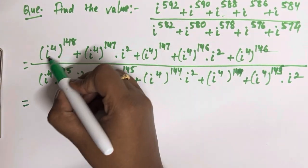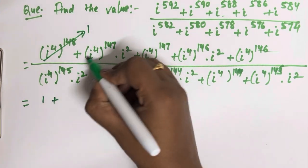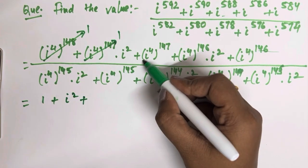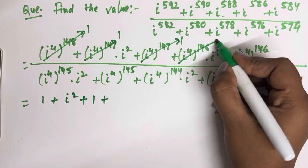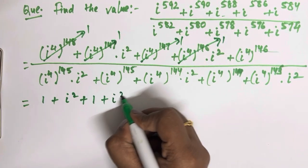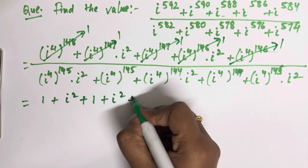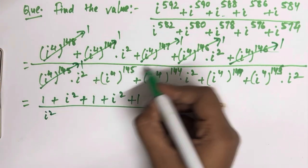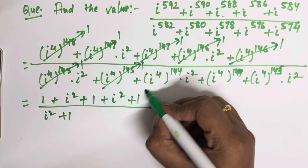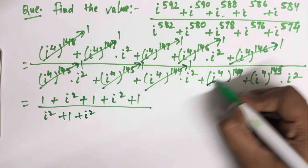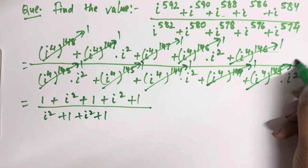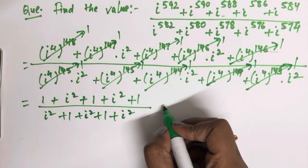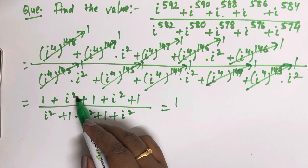Now since iota to the power 4 equals 1, each grouped term becomes 1. So 1 into iota square gives iota square, and the whole expression simplifies to terms of 1 and iota square alternating throughout the series.